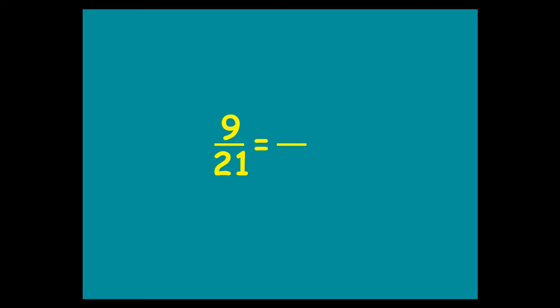So, the question you want to ask yourself when simplifying a fraction is: look at the numerator and the denominator and ask yourself, what times table has stations at 9 and 21? And in this case, the answer is 3. So, you divide the top by 3 to get a new numerator, divide the bottom by 3 to get a new denominator, so your final simplified answer is 3 sevenths.